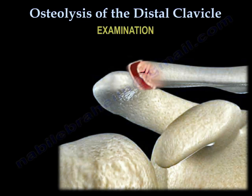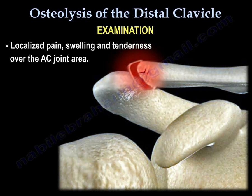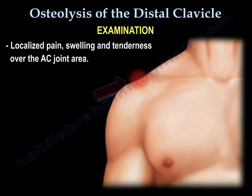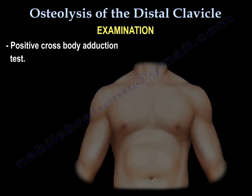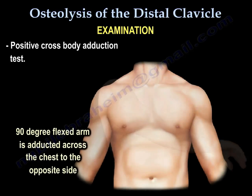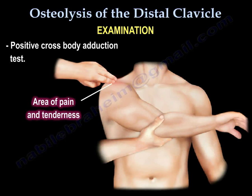On examination, the patient will have localized pain, swelling, and tenderness over the AC joint area. There is a positive cross-body adduction test, where the 90-degree flexed arm is adducted across the chest to the opposite side, reproducing the area of pain and tenderness.